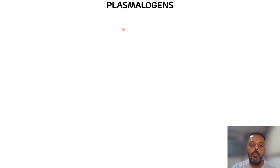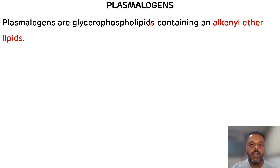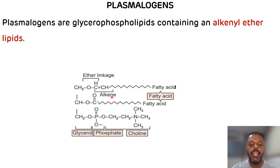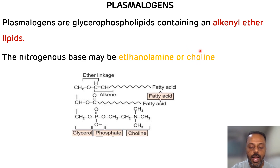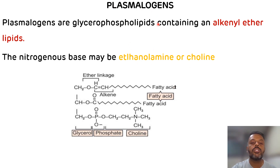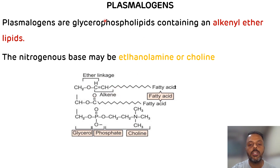Plasmalogens are ether phospholipids containing an alkene ether linkage. They contain a nitrogenous base in the form of choline or ethanolamine. If choline is the nitrogenous base, the plasmalogen is mainly found in the heart. If ethanolamine is the nitrogenous base, it is mainly found in myelin. Plasmalogens are important components of cell membranes as well as myelin, and they contain alkene ether lipids.